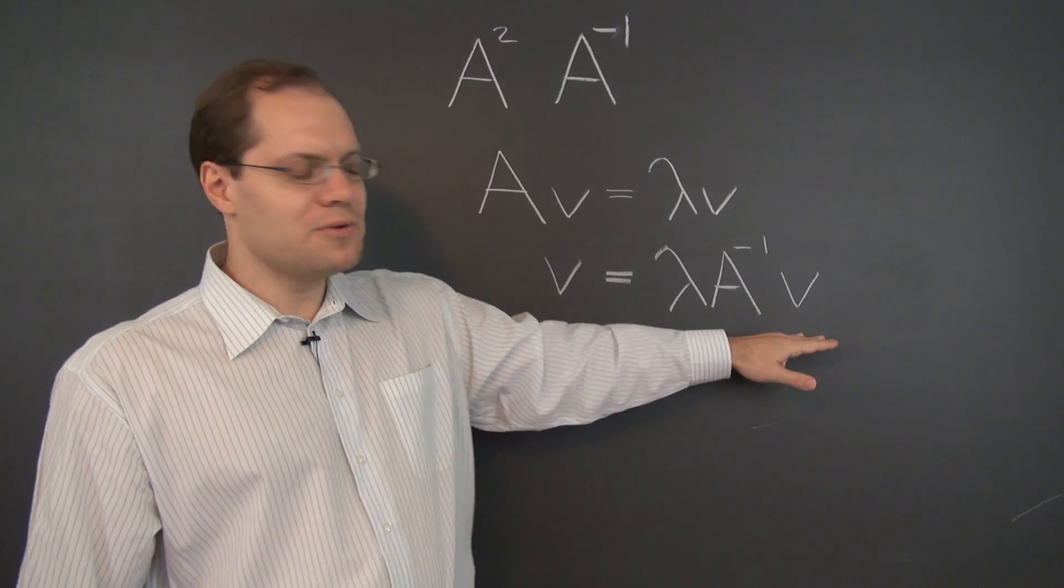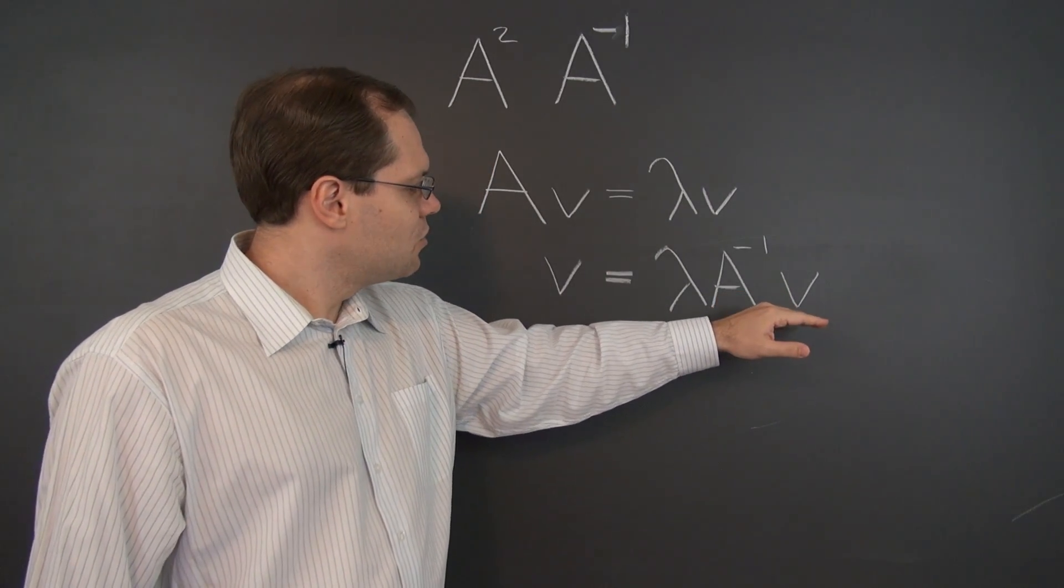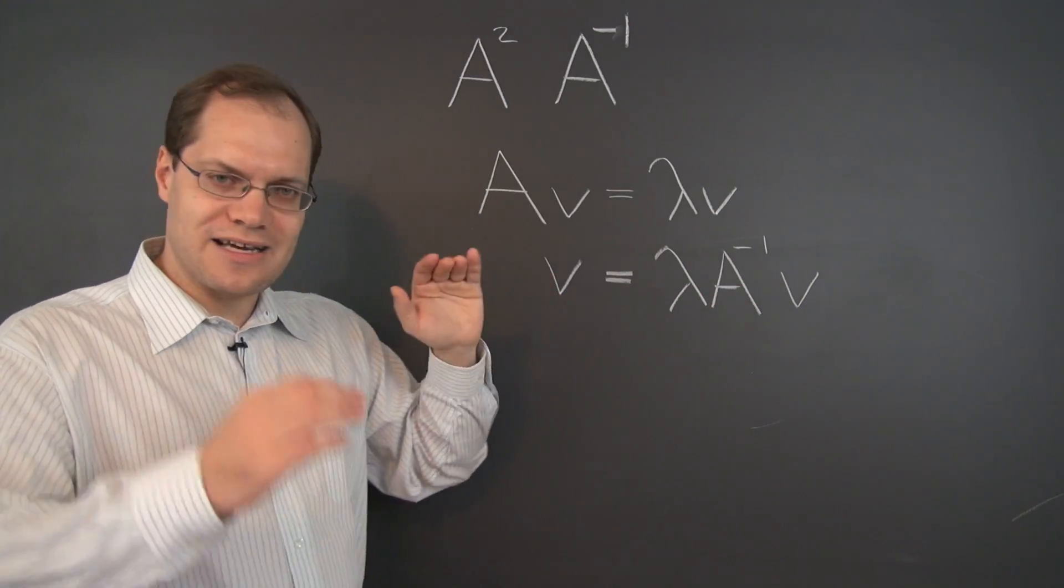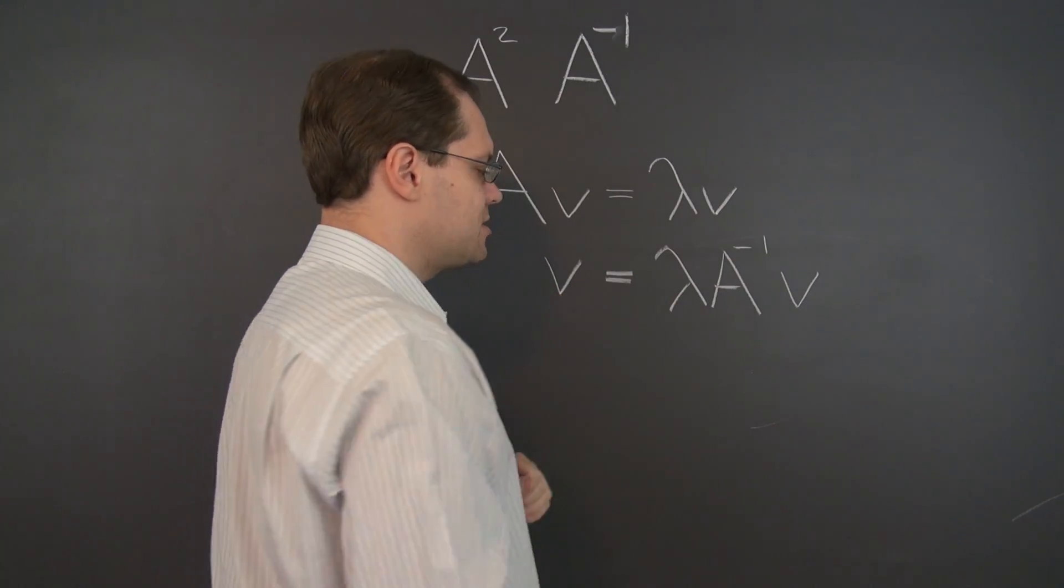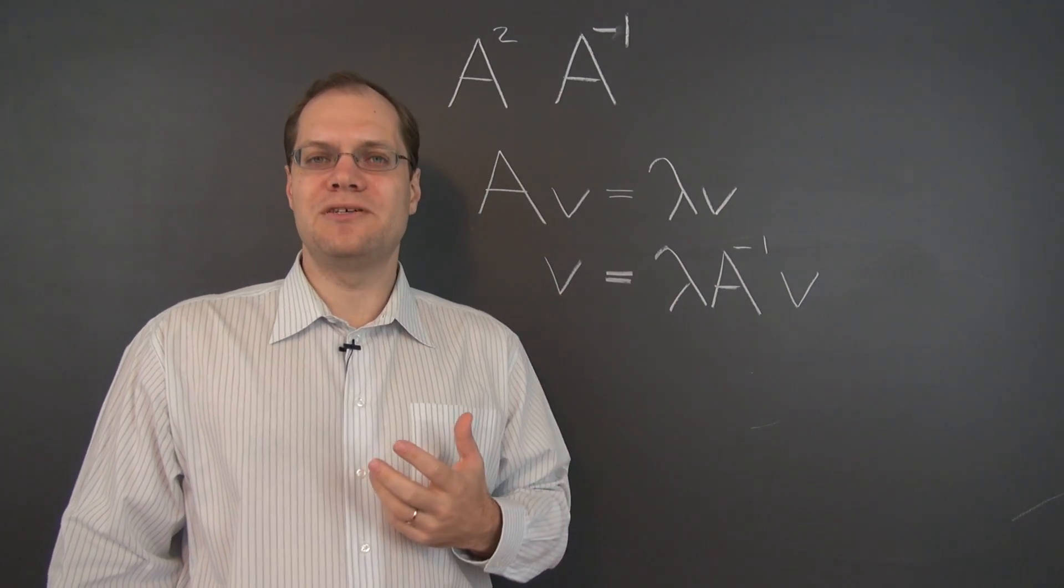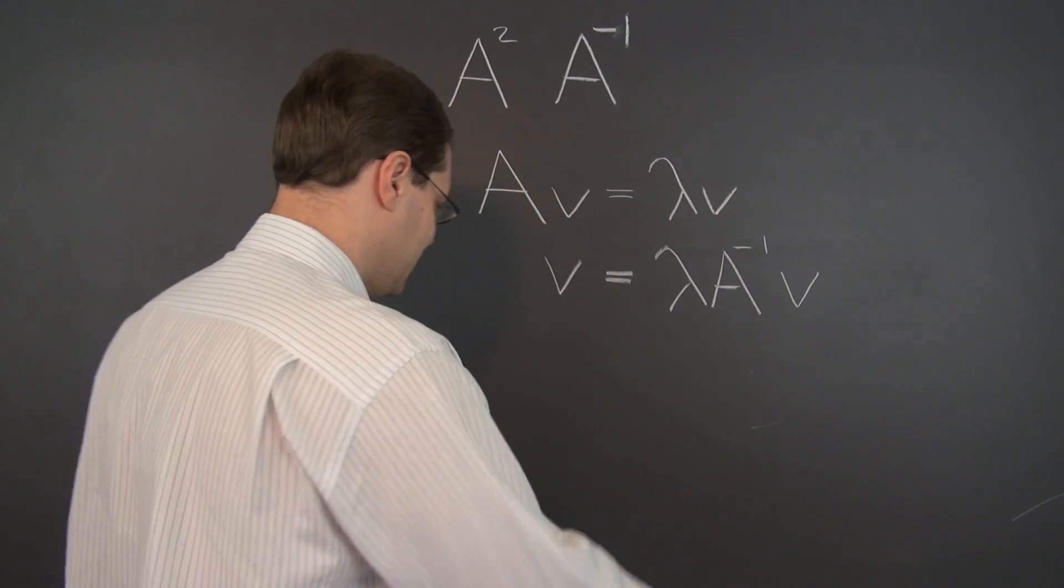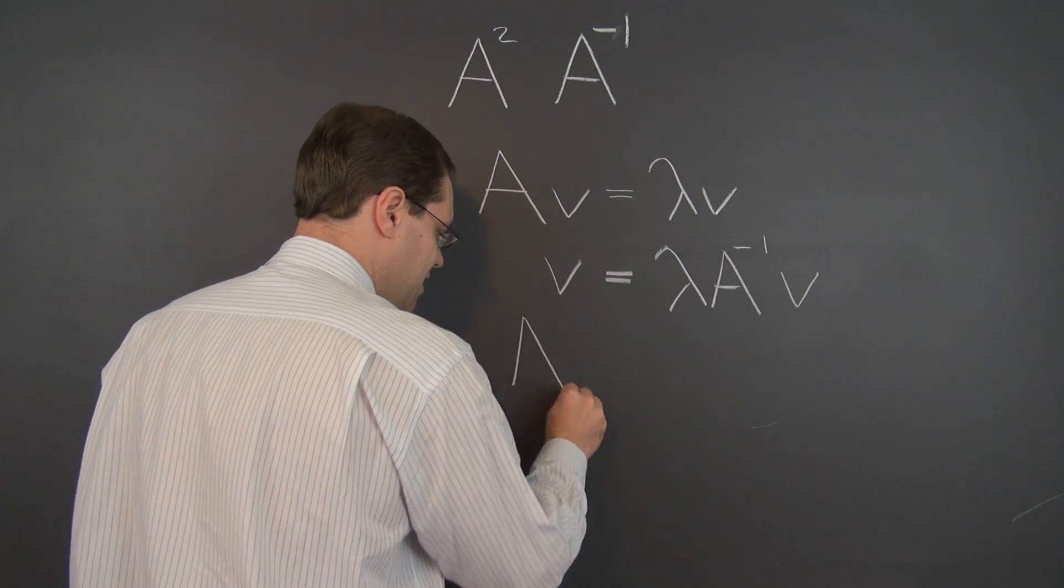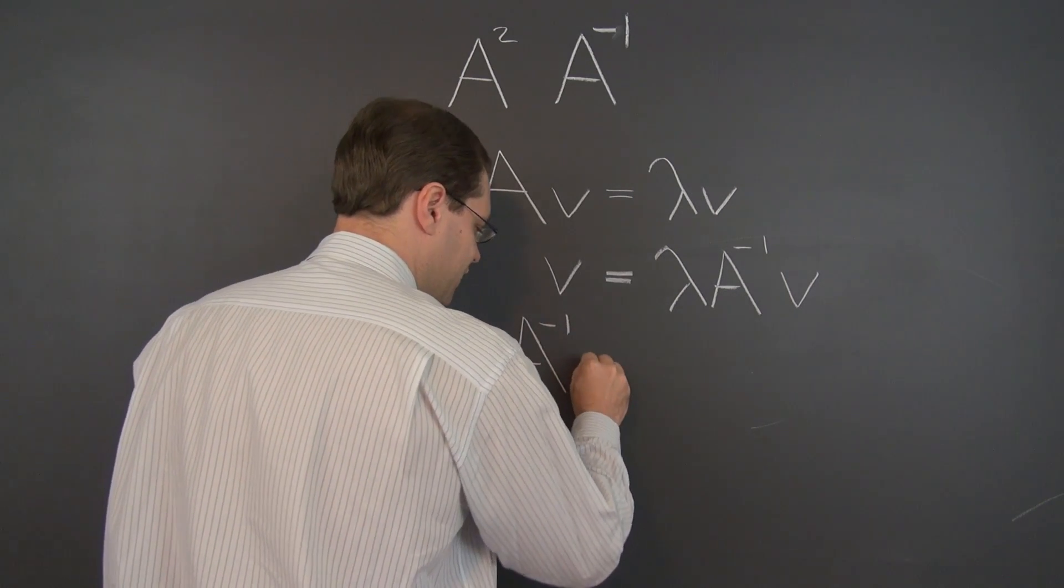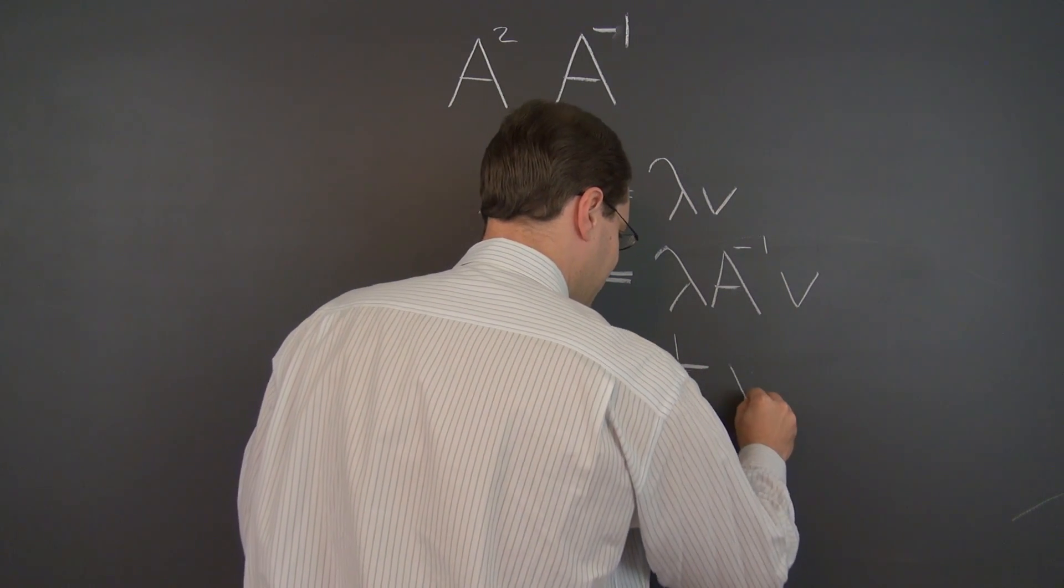This almost looks like the eigenvalue sort of relationship, except we have to move lambda to the other side to really drive that point home. So we'll switch the sides and divide both sides by lambda. Why can we divide both sides by lambda? Because lambda is non-zero if we assume that the matrix has an inverse. So A inverse V equals 1 over lambda, V.